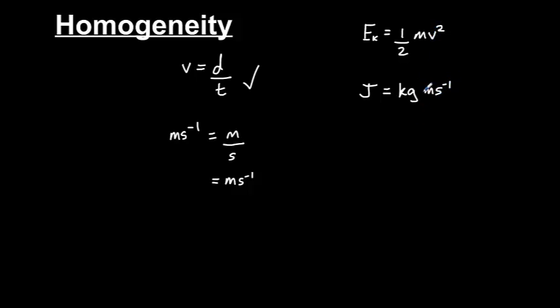However, at this stage, we need to be careful because the velocity is squared. So we need to put the whole thing in brackets and square it. Let's expand out that bracket. So we have kilograms metres squared seconds to the minus 2 equals joules.